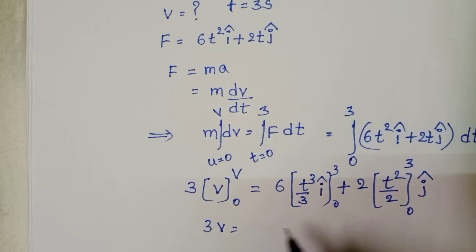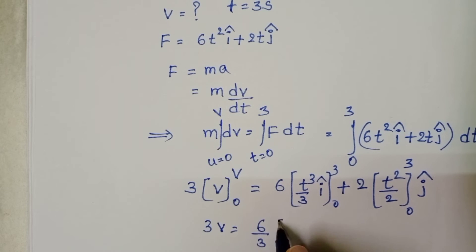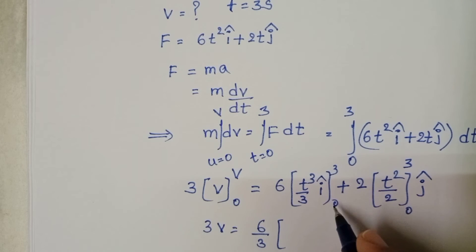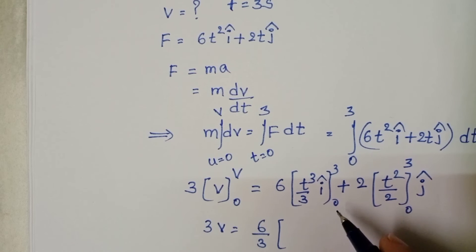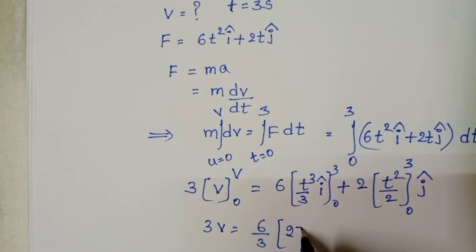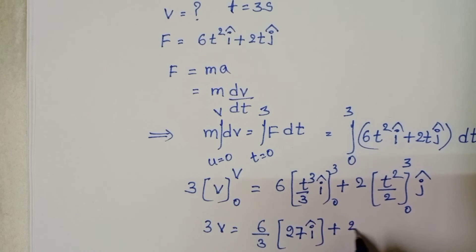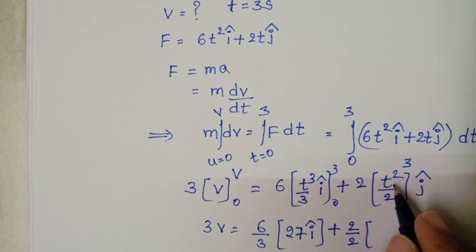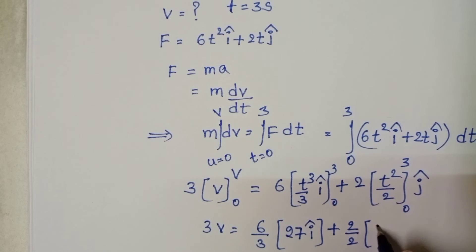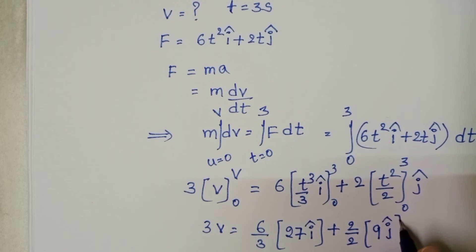Here 3v. 6/3 into upper limit 3 minus lower limit 0, so 3 whole cube becomes 27î plus 3 whole square 9ĵ.